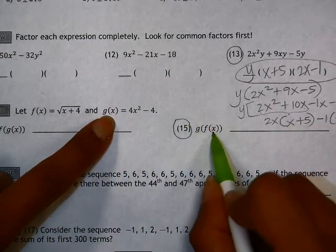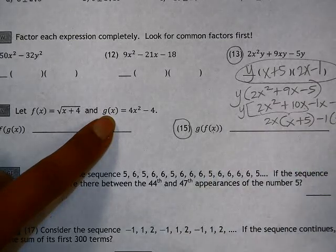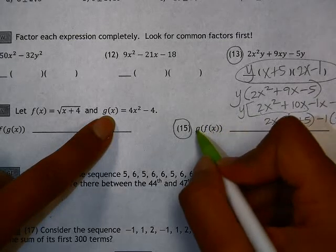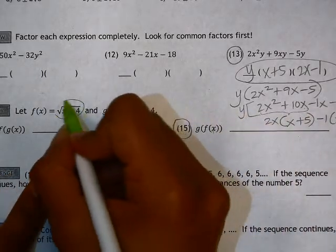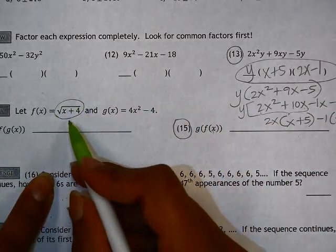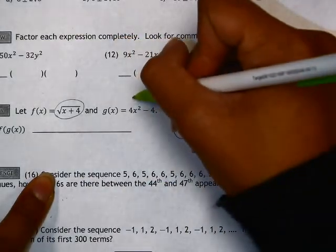We don't have an actual number to plug in for x, so our answer is going to be in terms of x. g of f of x tells us that we're going to take the entire function f of x, square root of x plus 4, and plug that anywhere we see an x in function g.